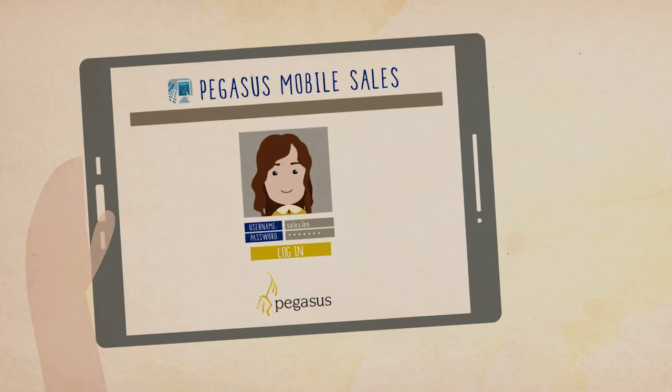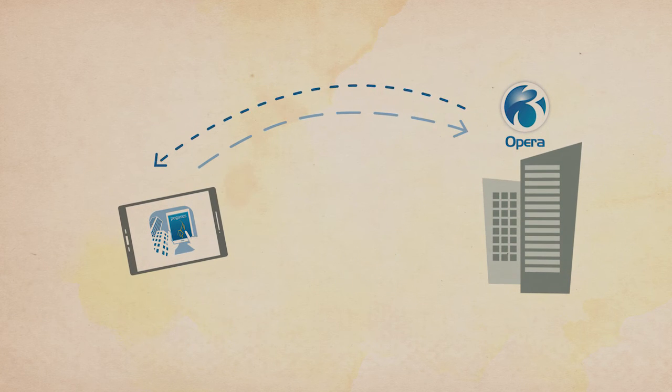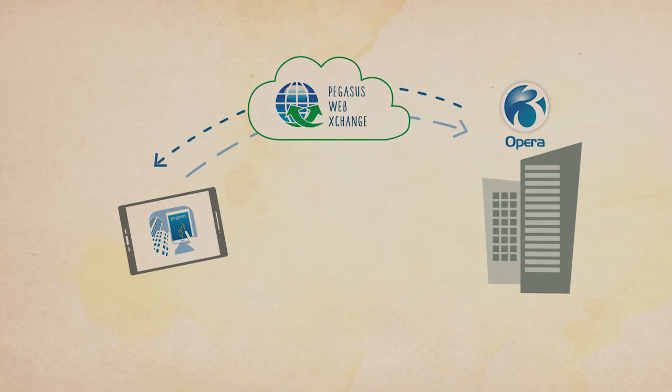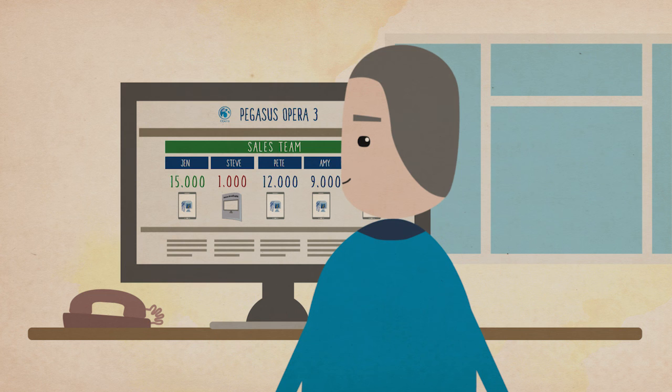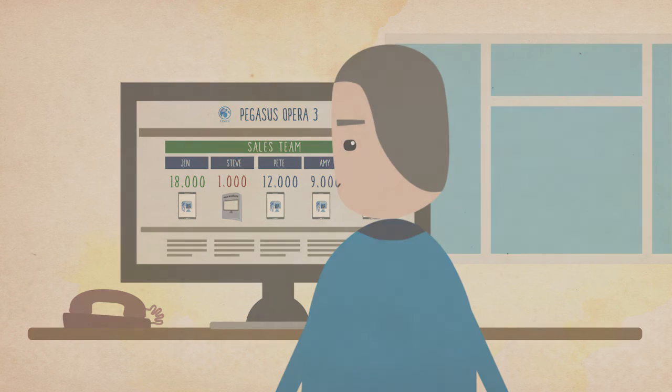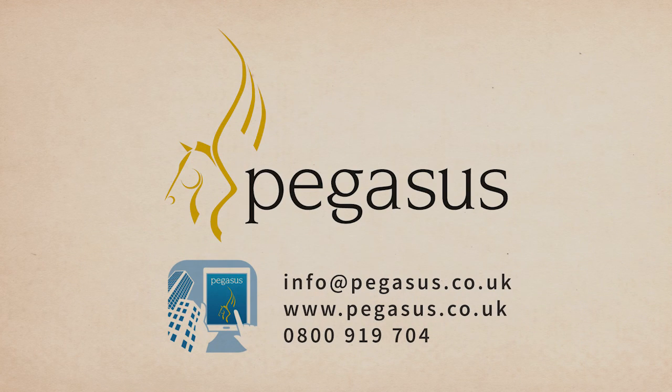Pegasus mobile sales is integrated with Opera 3 through Pegasus web exchange so orders are transferred from her tablet securely meaning Jen's boss can see how the sales team are performing in real time. Mobile sales from Pegasus connect your sales team with your office and sell more.